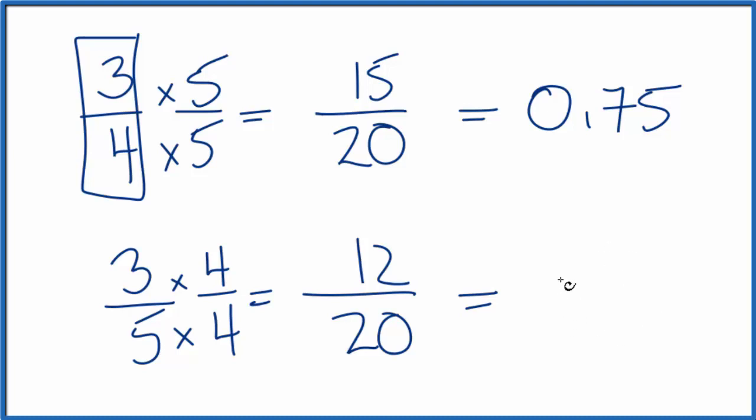And we end up with zero point six. You could think of it as zero point six zero. And clearly see that zero point seven five is larger.